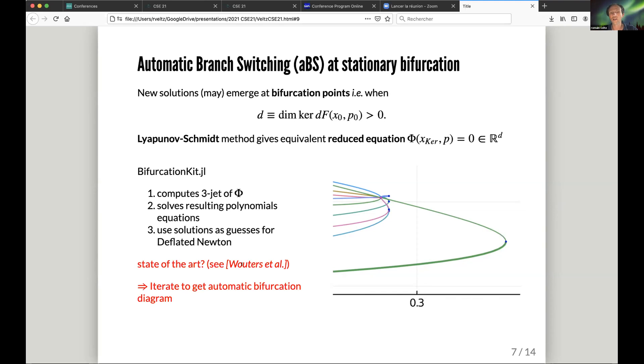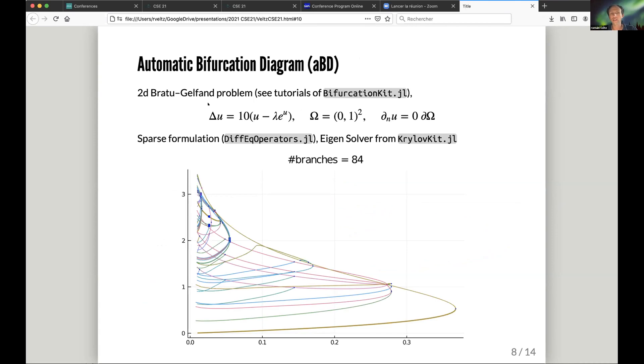If I apply this to this 2D Bratu-Gelfand problem, which is written here, you can recognize a part of the diagram I showed on the last slide. You enter the vector field, you press the button, I don't know, like five minutes later you obtain these 84 branches like this. It's very powerful and at the same time it's quite scary because you have a lot of solutions.